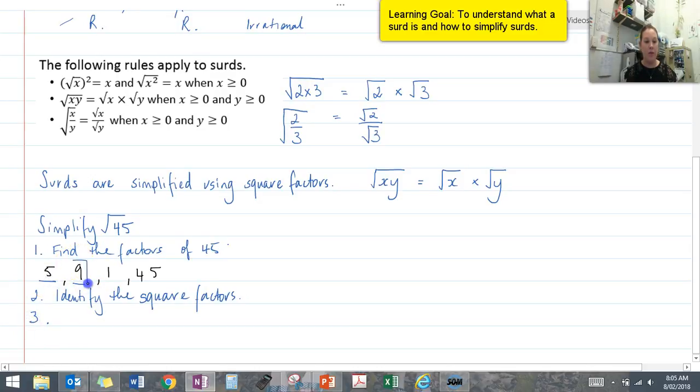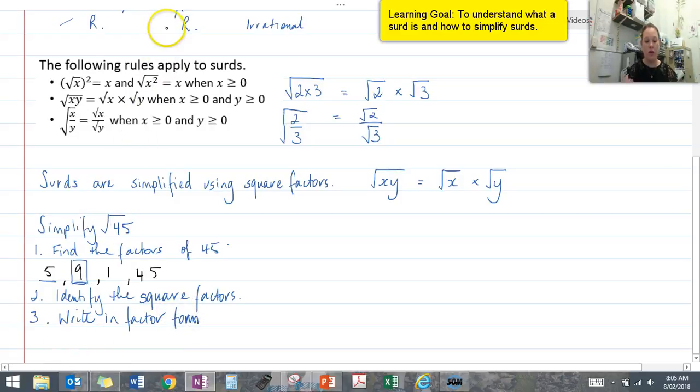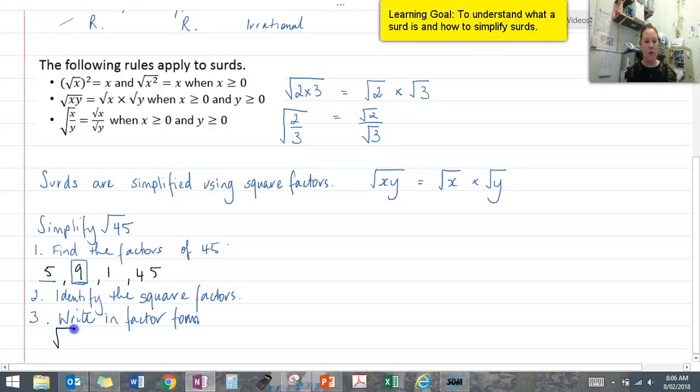9 being the square factor, because the square root of 9 is 3. So then we're going to write in factor form. And that's going to look like the square root of 5 times 9, which is going to equal the square root of 5 times the square root of 9. We're using this rule here.